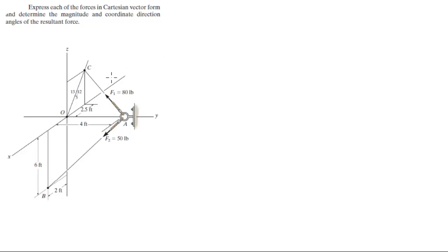Alright guys, now we're going to do this rather long problem, but if you pay attention it can become a very easy problem. Basically we have three points: point A, point B, and point C. What we have to do is express each of the forces in Cartesian vector form — these two forces F1 and F2 — and determine the magnitude and coordinate direction angles of the resultant force.